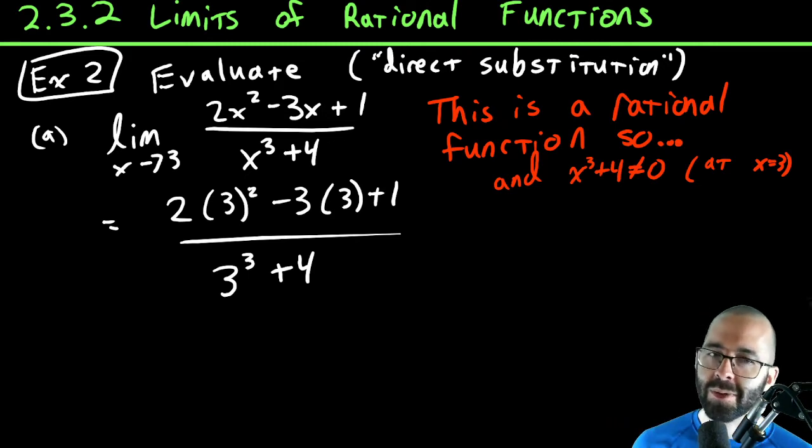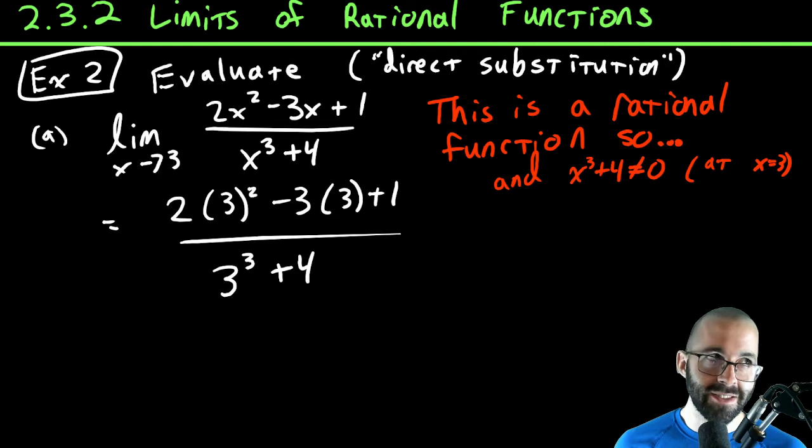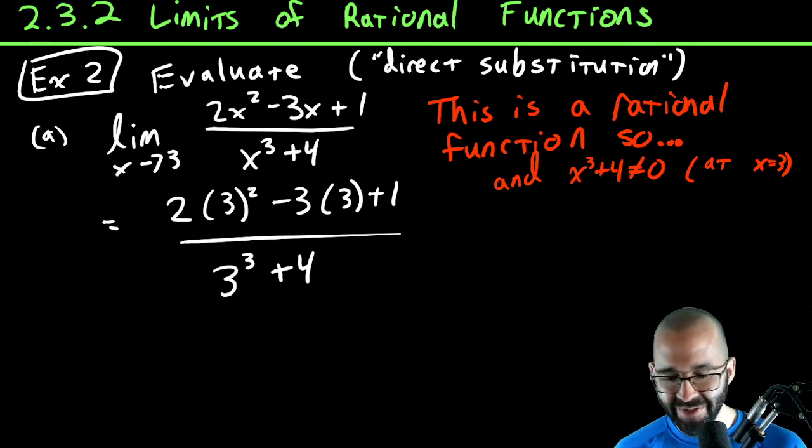So we can literally just say this is equal to 2(3)² - 3(3) + 1 over 3³ + 4. We can just plug it in, which is a little quicker. Thank you, property of rational functions. Thank you, mathematicians of old for that little property. Although I guess mathematicians of old are the ones who got us into this mess in the first place. If we just never did math—well, if we never did math, we wouldn't have a video for you to watch.